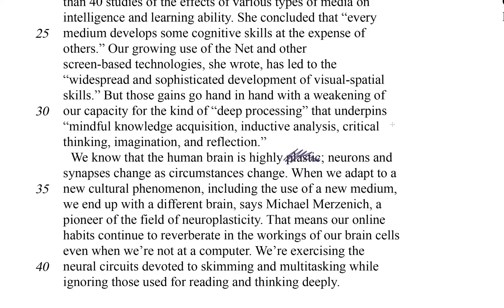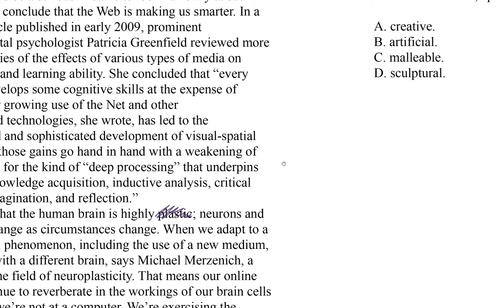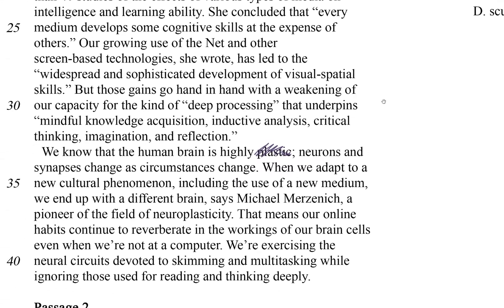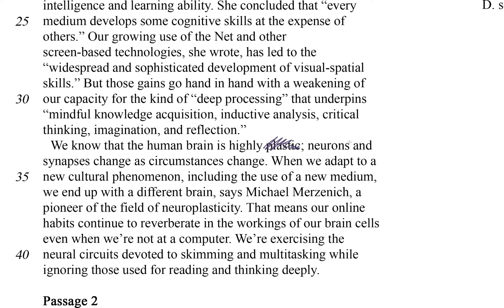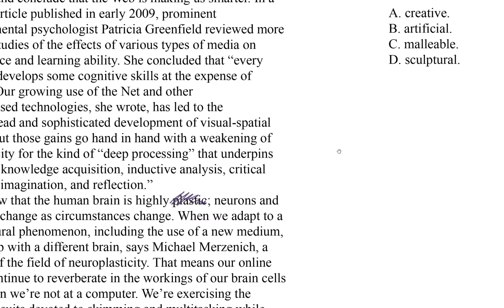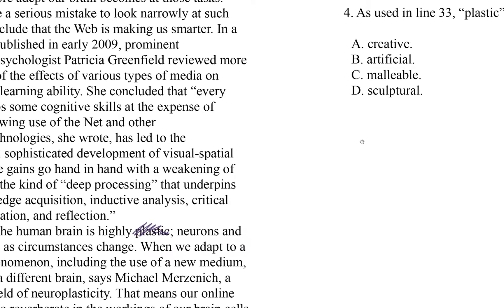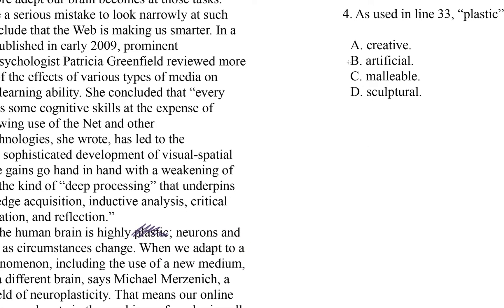We know that the human brain is highly... with choices: creative, artificial, malleable, or sculptural. We know that the human brain is highly creative — neurons and synapses change as circumstances change. That's plausible sounding, although it doesn't necessarily make logical sense. What do brain parts changing have to do with the brain's creativity? Choice B: we know that the human brain is highly artificial — well, that just sounds wrong. It's a brain; it's made of natural stuff. That can't be an option.